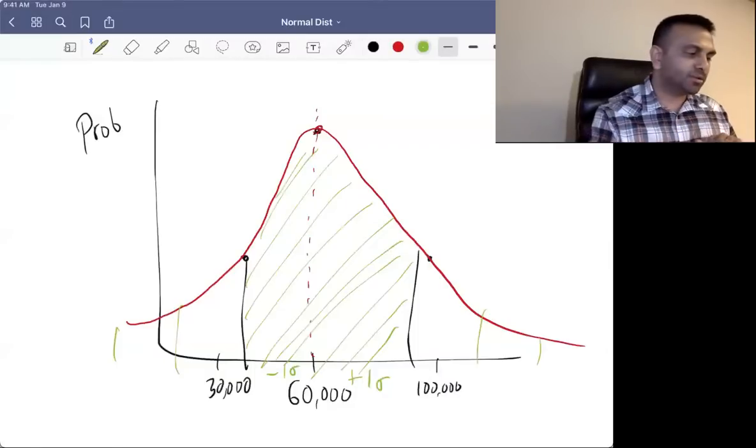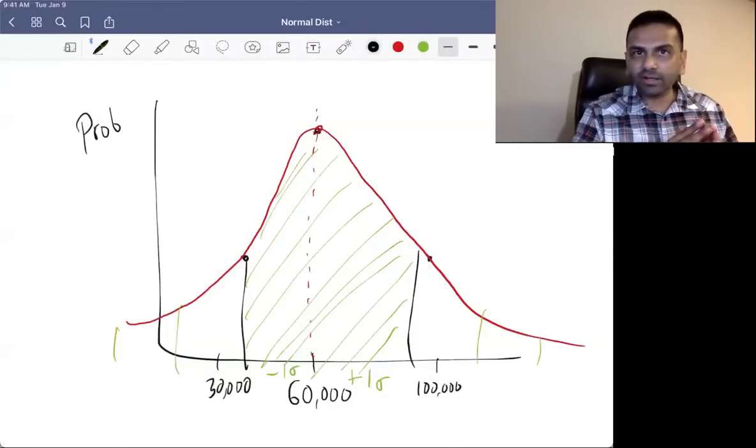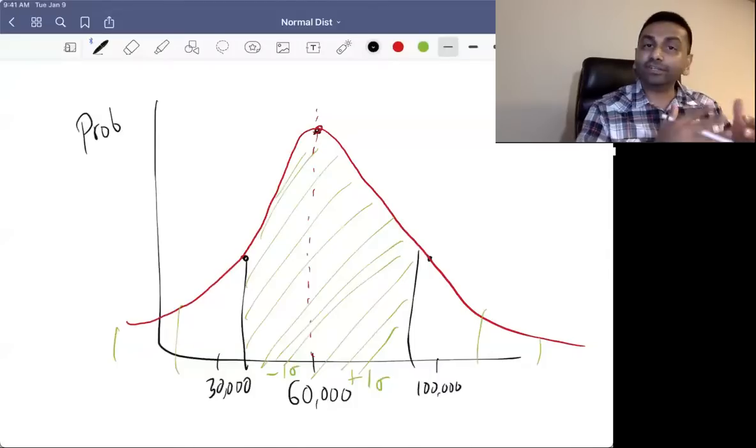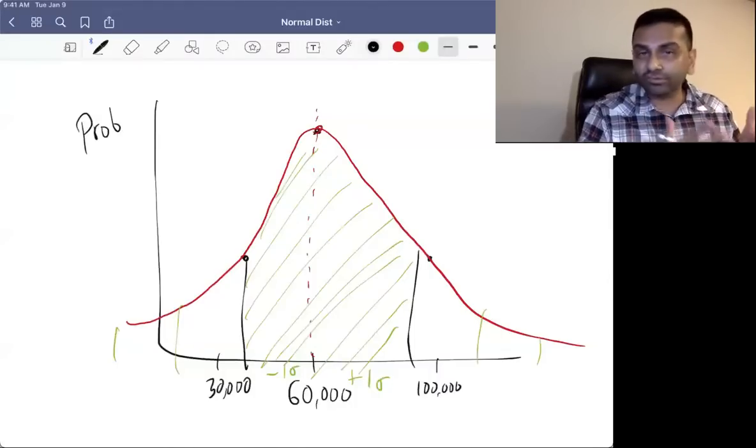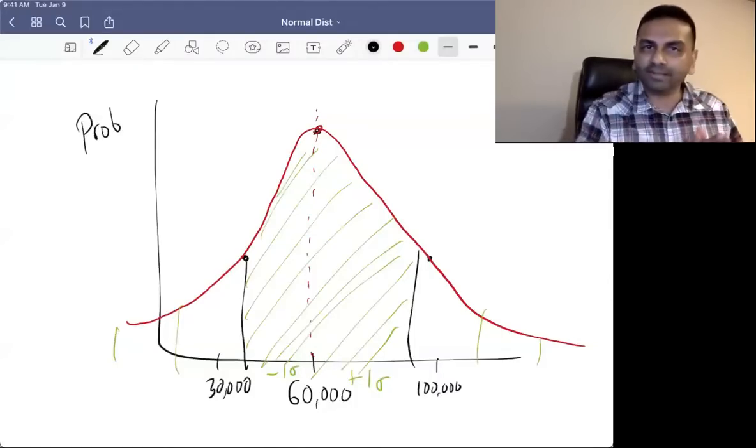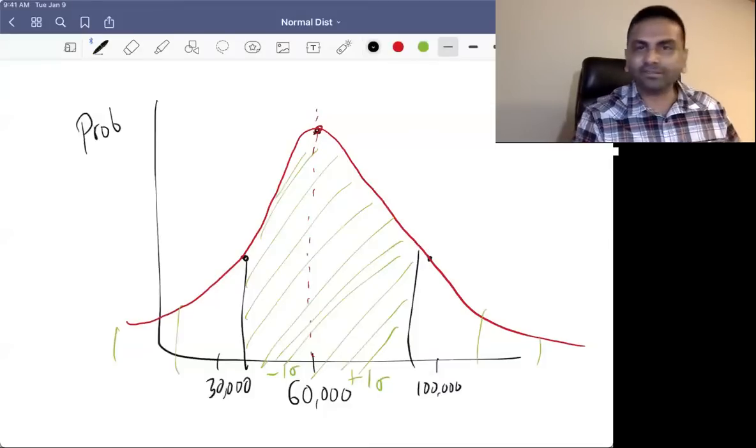So the cool thing about the normal distribution is many real world scenarios have a distribution that's pretty close to normal, that's approximated by the normal distribution. And there's a few other cool properties about the normal distribution that lets us use it in a lot of inference.